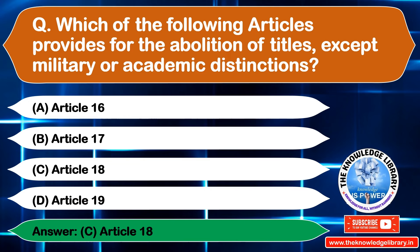The next question is: the cultural and educational rights are guaranteed under which articles? Option A: Articles 29 and 30, Option B: Articles 27 and 28, Option C: Articles 19 and 20, Option D: Articles 21 and 22. The correct answer is Option A: Articles 29 and 30.